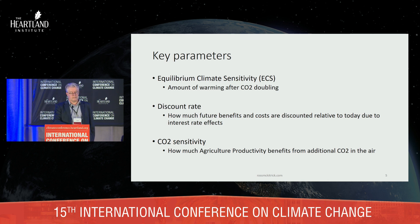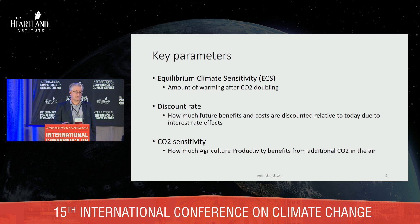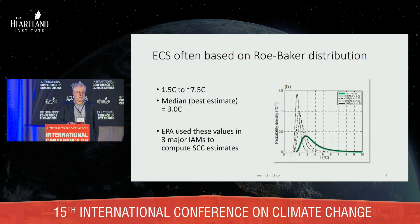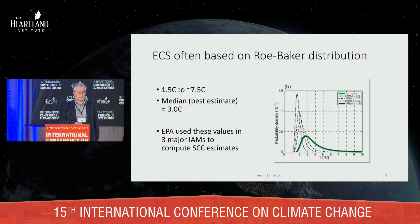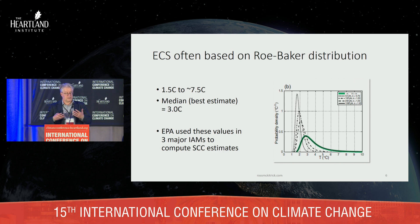The discount rate is the parameter that says how much you should downweight costs and benefits that happen in the future compared to the present. The CO2 sensitivity refers to how much agricultural productivity is boosted by having additional CO2 in the air. The equilibrium climate sensitivity used by the EPA is based on something called the Roe-Baker distribution, from a 2007 study that looked at a whole bunch of climate models. It produces a distribution ranging from a low of 1.5 degrees up to about 7.5 degrees, with a median of 3 degrees.